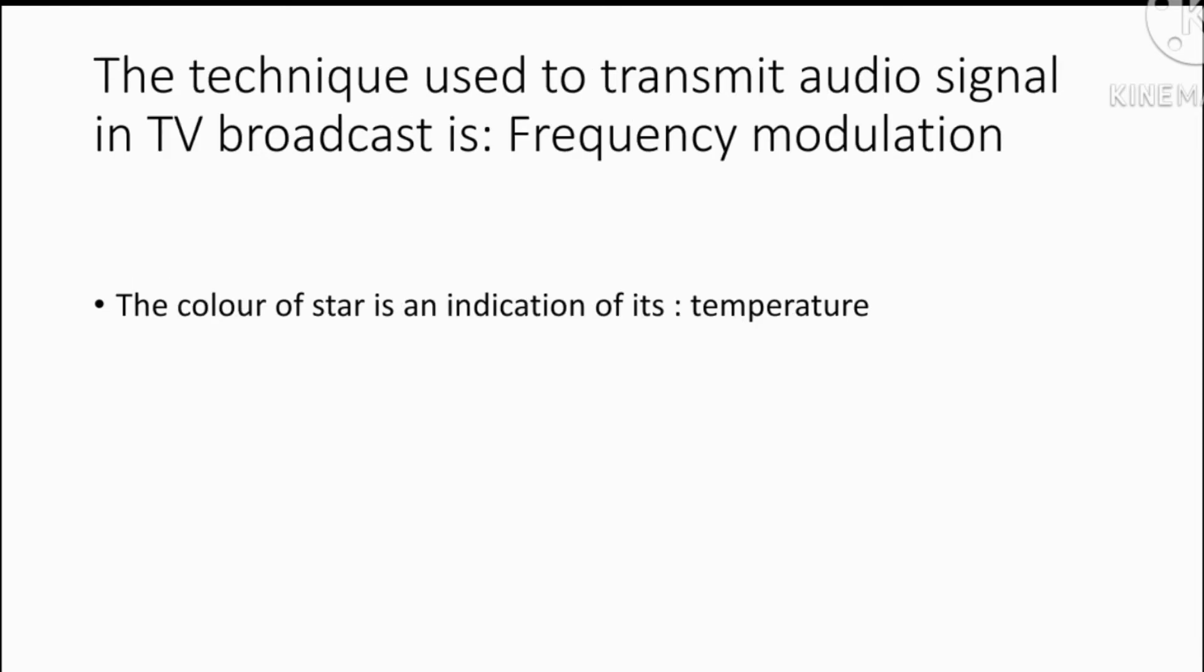Next is, the technique used to transmit audio signal in TV broadcast is frequency modulation. Frequency modulation is used to transmit audio signal in TV broadcast. Frequency modulation signal has large bandwidth, which is why there is no noise or interference issue in FM signal in adjacent band.